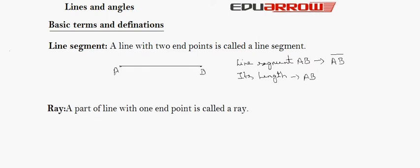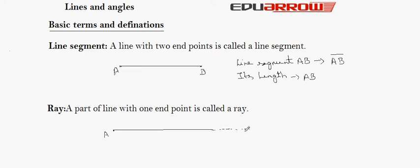A part of a line with one endpoint is called a ray. Let's take a line with only one endpoint, say A. There is no other endpoint and we can extend it indefinitely. A ray is denoted by AB in the forward direction.